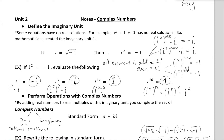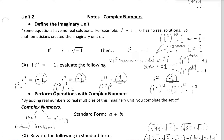First, we can play around with some patterns of exponents for the value i. i squared is negative one, so we can use that as part of our factors as we increase exponents. For example, if I have i cubed, I can break that down into i squared times i — that's three i's. i squared is negative one, so negative one times i gives us negative i.